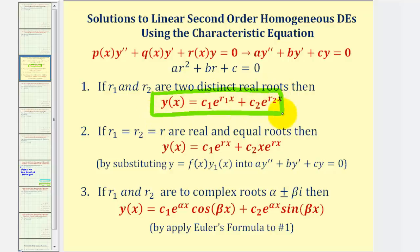But in our case, since we have two equal real roots, the general solution is in this form. Notice the only difference is y of x here has an extra factor of x in the second term.